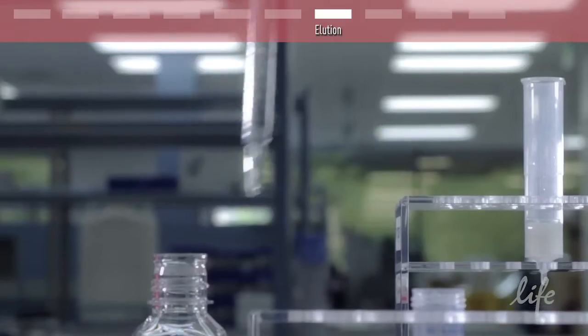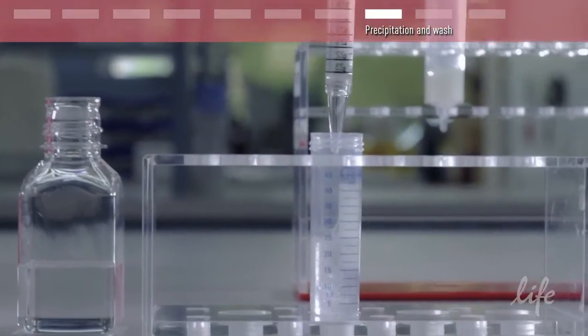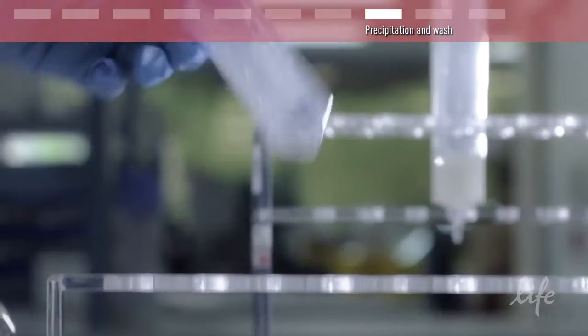Now that we have the eluate, add isopropanol to precipitate the plasmid DNA. Mix and centrifuge.